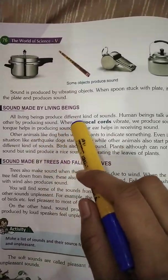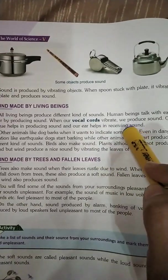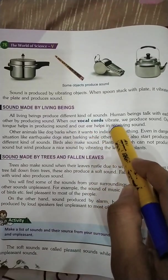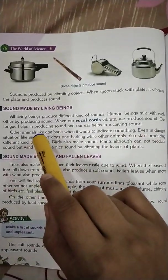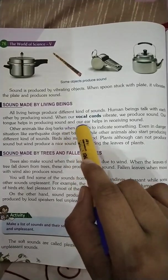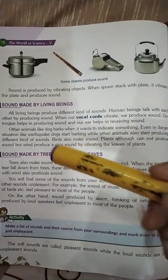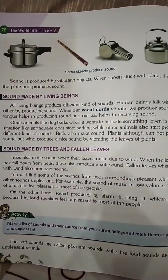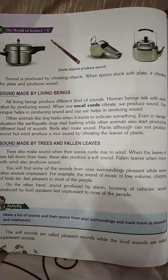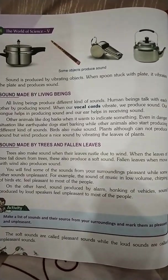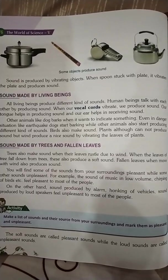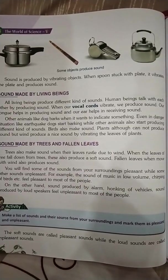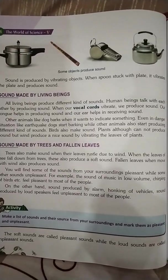All living beings produce different kinds of sounds. Human beings talk with each other, producing sound whenever vocal cords vibrate. We produce sound; our tongue helps in producing sound and our ears help in receiving sound. تمام living beings الگ الگ طرح کی آوازیں نکالتے ہیں۔ انسان بات کرتے ہیں، vocal cords vibrate کرتی ہیں، زبان آواز بنانے میں اور کان سننے میں مدد کرتے ہیں۔